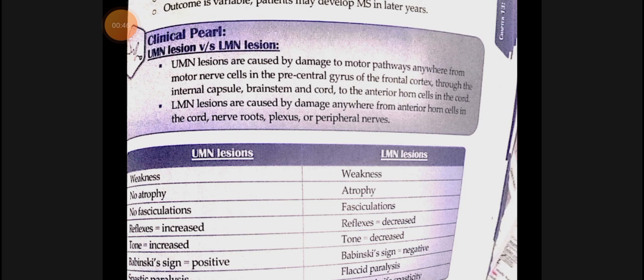Lower motor neuron lesion occurs from the spinal cord's anterior horn cells to our peripheral nerves — any damage there is called lower motor neuron lesion. The pathway goes from brain to spinal cord, where nerves stay in the anterior horn cells, then motor nerves go out to supply muscles. Damage from brain to anterior horn cells is UMN; from anterior horn cells to peripheral nerves is LMN.